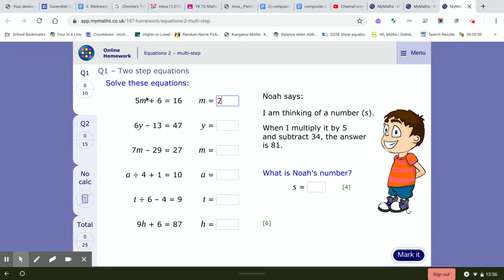Some of you have another way of working it out and that is totally fine. If we look at the bottom example, 9h plus 6 equals 87, you do the opposite to add 6, that would be take away 6. That would leave you at 81, and 9 times 9 is 81.